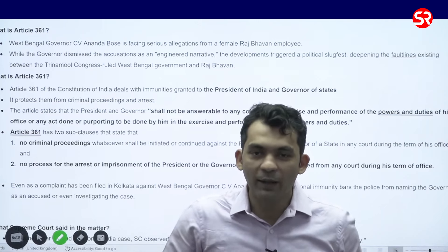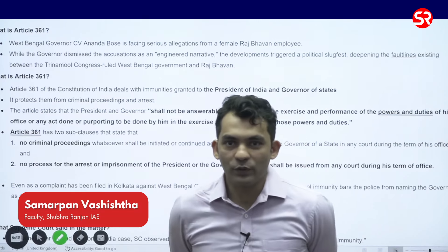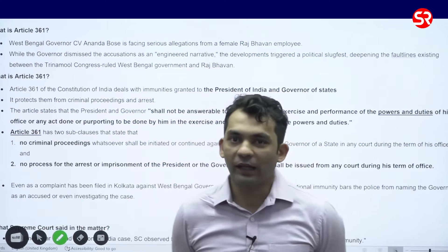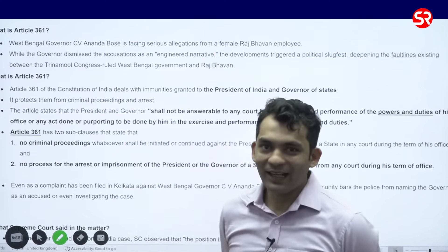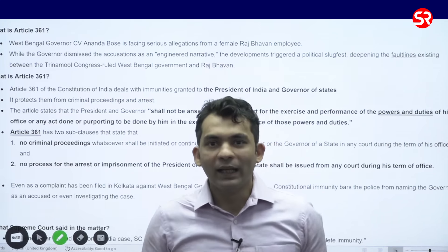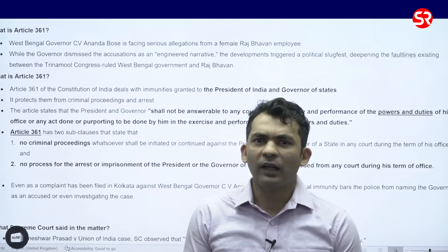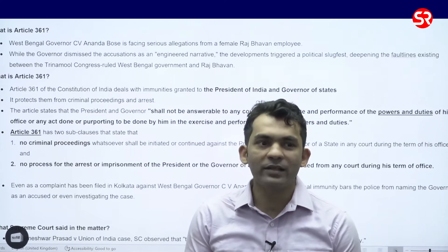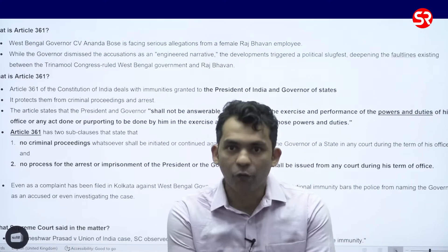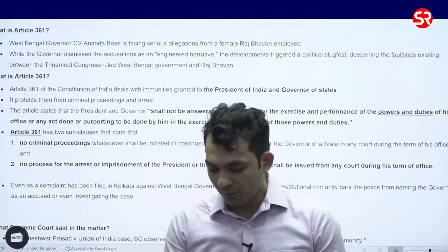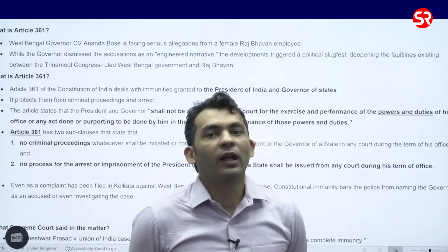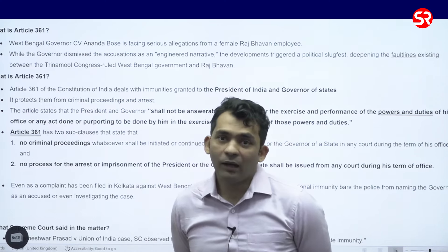Hello everyone, my name is Samarpan Vashist and in today's episode we'll be taking a look at Article 361 and why this article is in news. There are two levels of government and the de jure heads, or nominal heads, are the honorable President at the union level and the Governor for every state at the state level, and there are some immunities and privileges which they enjoy.